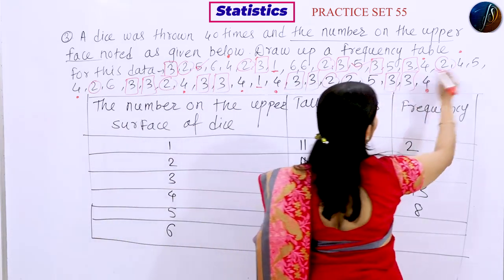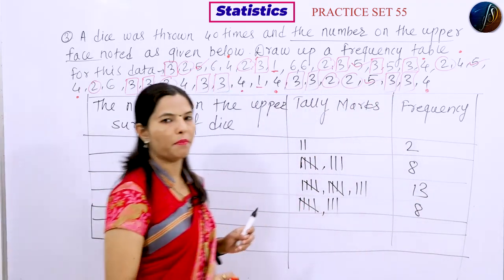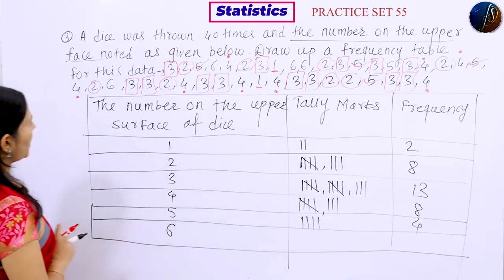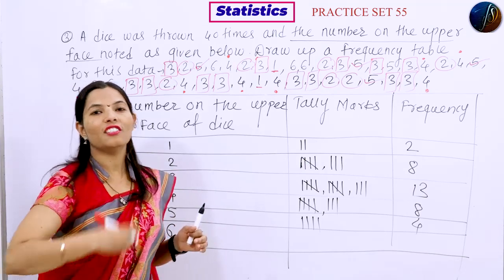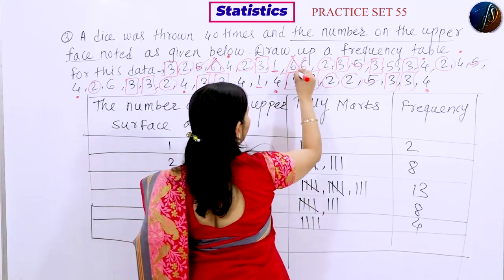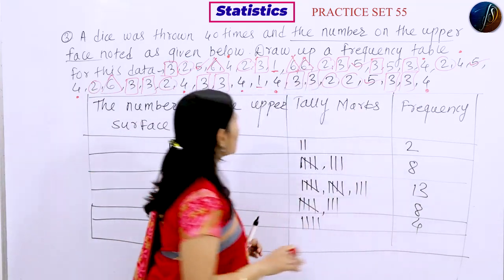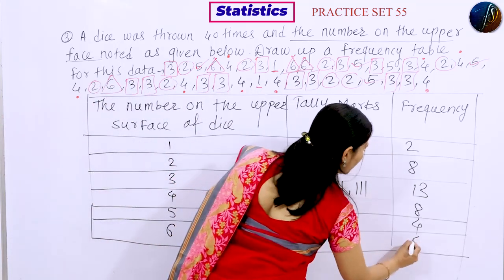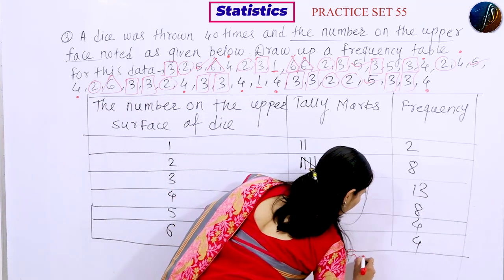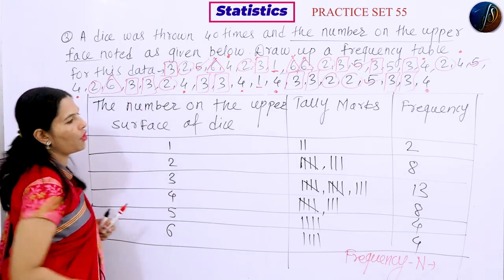Continuing, we count: 1, 2, 3, then 4, 5, 6, 7, and 8 — that is 8 times for the value 4. We mark the tally: 1, 2, 3, 4, 5 — and then 1, 2, 3 more. So we have tally marks recorded and the frequency is 5.